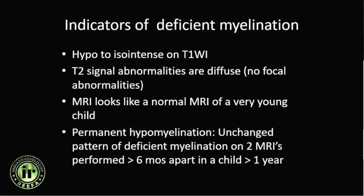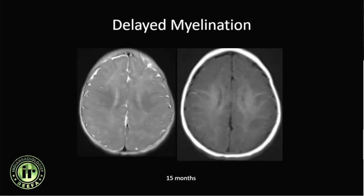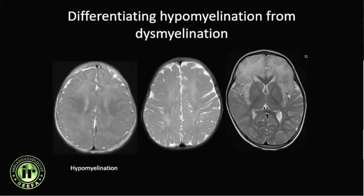A fifteen-month-old child shows diffuse T2 hyperintensity in the white matter, bilaterally symmetric, which would have been normal at three to four months of age. Since this child is fifteen months old, this represents delayed myelination. Hypomyelination with diffuse ill-defined signal abnormality on T2-weighted images should be distinguished from dismyelination, as in Krabbe's disease or Alexander's disease where there is a gradient — there will be no gradient in hypomyelination.